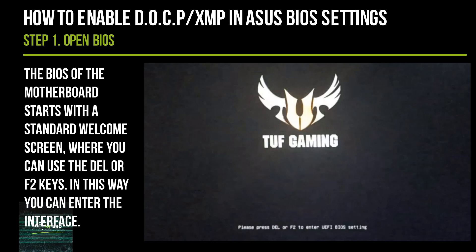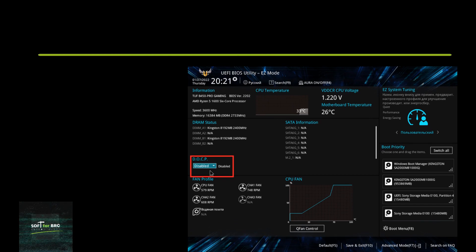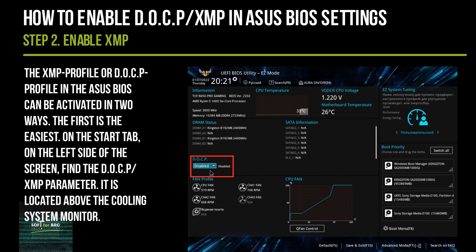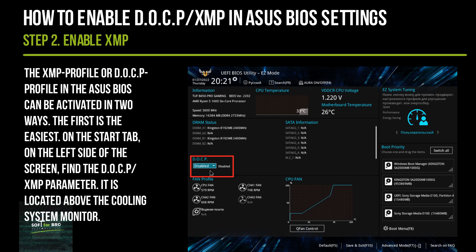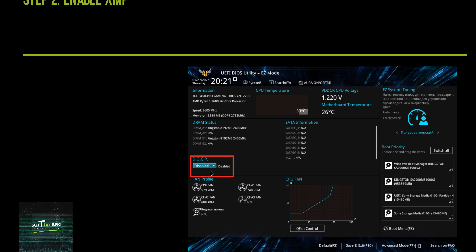The BIOS of your motherboard starts with a standard welcome screen where you can use the Del or F2 keys to enter the interface. The XMP or DOCP profile in the ASUS BIOS can be activated in two ways. The first is the easiest: on the start tab on the left side of the screen, find the DOCP or XMP parameter, located above the cooling system monitor.